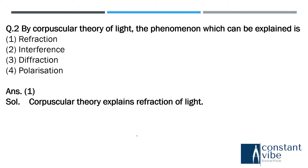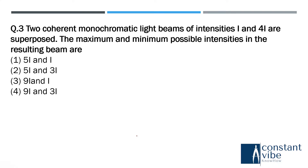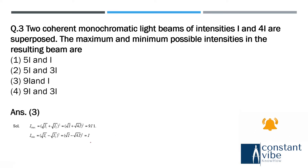Next question: Two coherent monochromatic light beams of intensities I and 4I — what are the maximum and minimum possible intensities in the resulting beam? You can find the answer here. Suppose I₁ and I₂ are the two intensities in the beams.